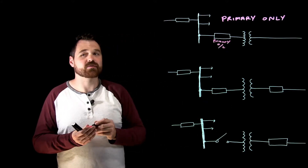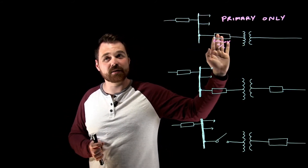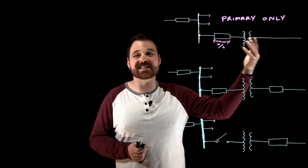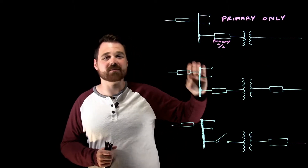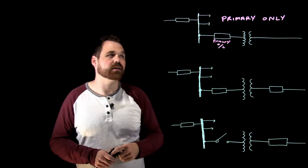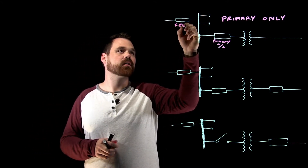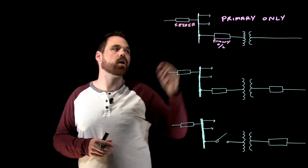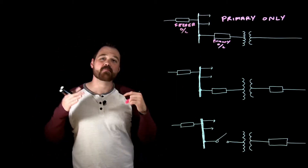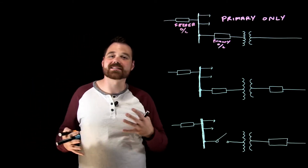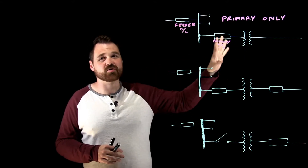The primary OC is going to be directly protecting the transformer. The primary OC not only protects the primary, but it is actually also protecting the secondary, because whatever goes into my transformer has to come out of my transformer. So it's protecting both the primary and the secondary. We would also have this feeder OC somewhere else. This is the most common installation method that you'll see — a primary overcurrent device protecting the primary of the transformer.